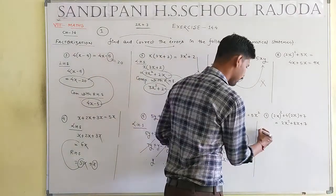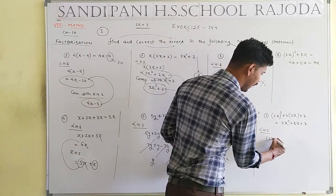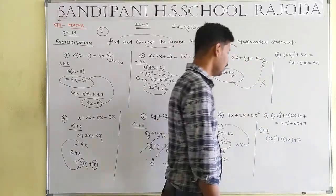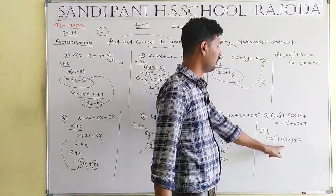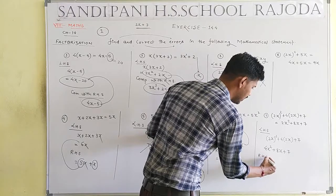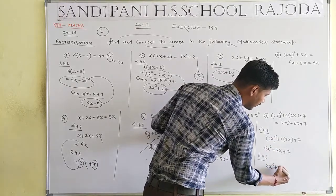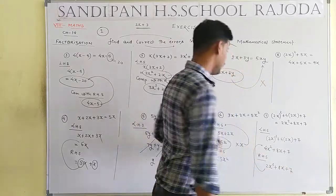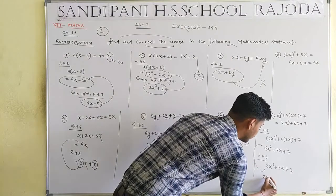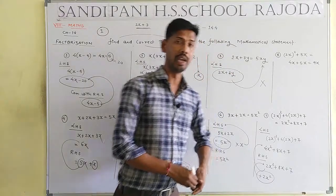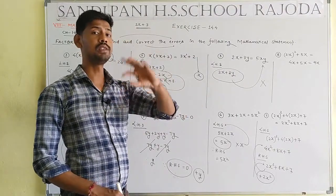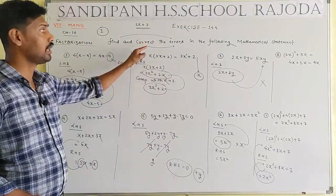Question number 7: LHS is (2x plus 4) whole square. 2 times 2 is 4, then 4 times 2 is 8, plus 7. So LHS equals 4x square plus 8x plus 7. But RHS is given as 2x square plus 8x plus 7. The error is that 2 should be 4 — we need 2x square plus 2x square to get 4x square. The correction balances LHS and RHS.